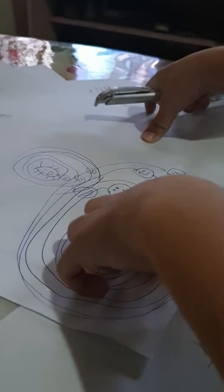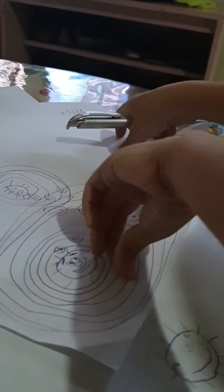Look. This is Mercury, Venus and Earth and Mars, Jupiter, Saturn, Uranus, Neptune.